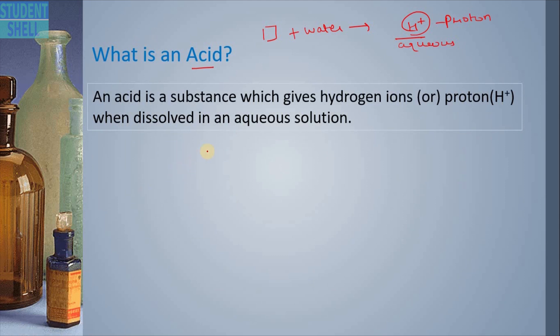So please note down: an acid is a substance which gives hydrogen ion or proton when dissolved in an aqueous solution. Now I will be taking examples of the most important and most common acids. In the laboratory you can find wide range of acids, but here for our understanding we will take the most important acid, that is sulfuric acid.